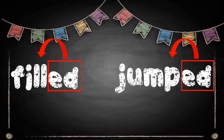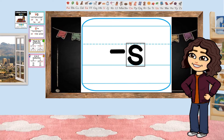Let's finish coding these words. Let's look at our first word — look for the vowel. Is it followed by a consonant? Yes, it is — in fact, double consonants, like we talked about with the word padded. A vowel followed by a consonant is coded with a breve.